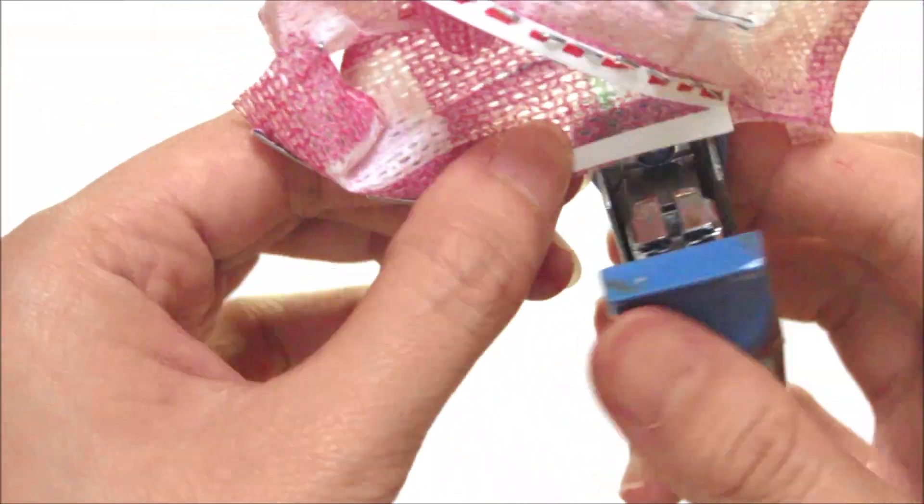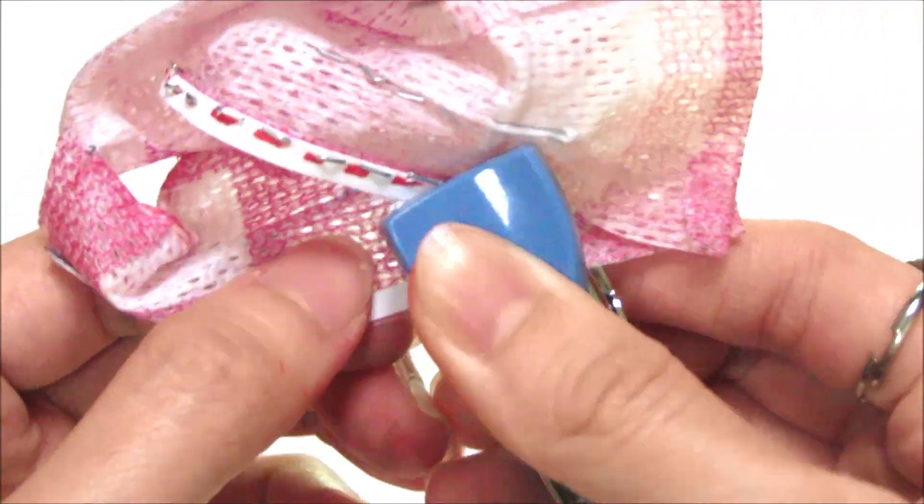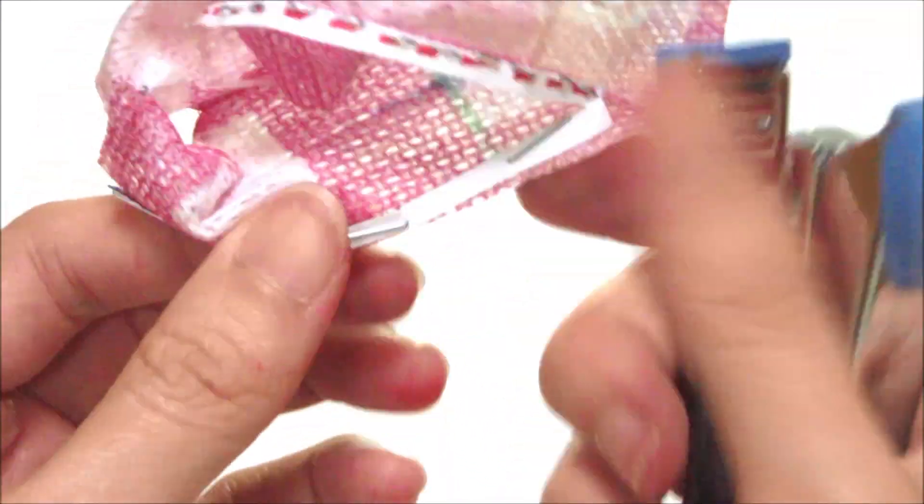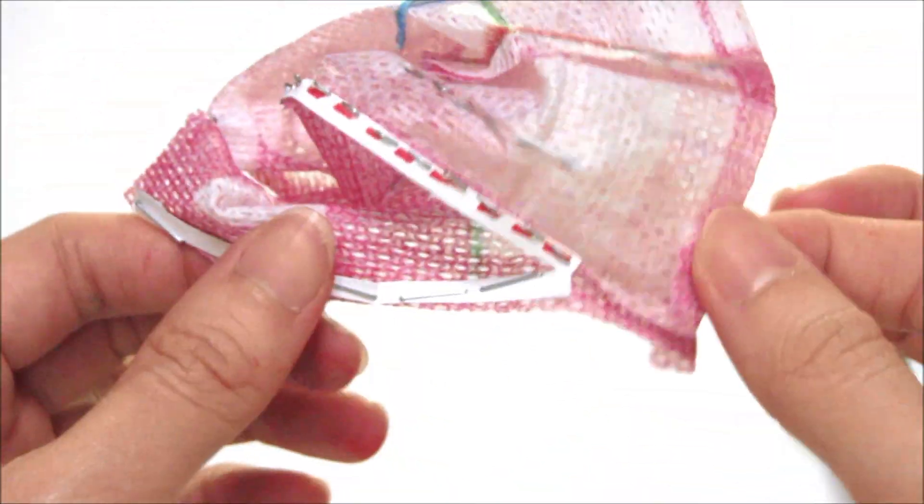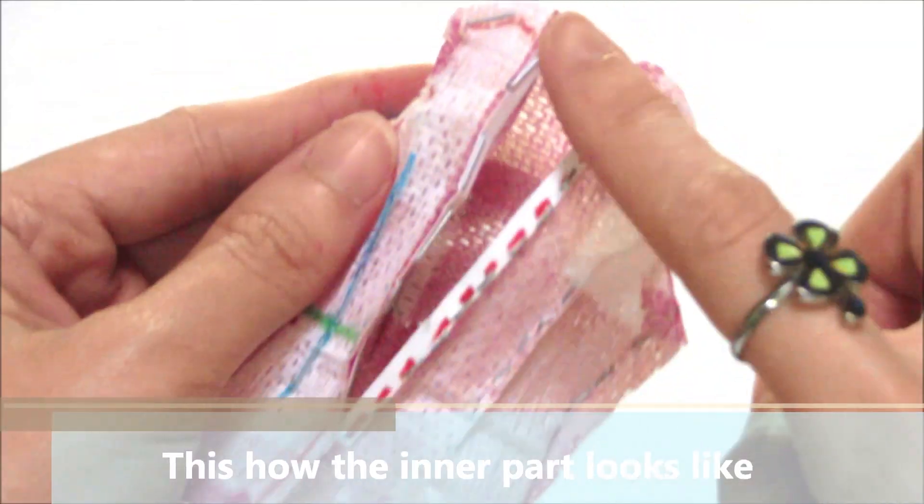I'm sorry I can't really show you the whole process of doing it because it's really really complicated. So I really advise you to google and find out how you can sew the zip on. So now we're done with the zip. This is how the inner part looks like.